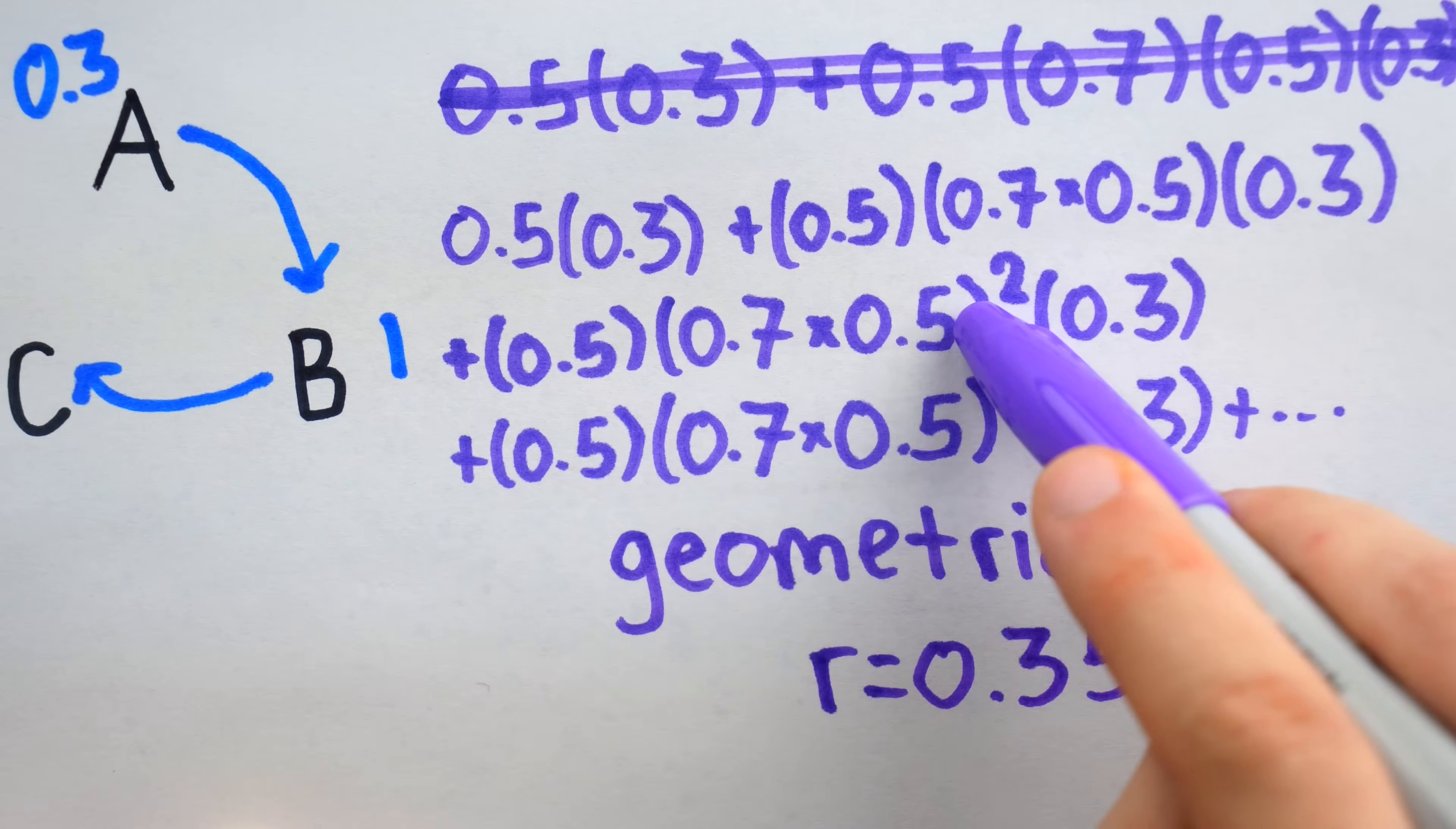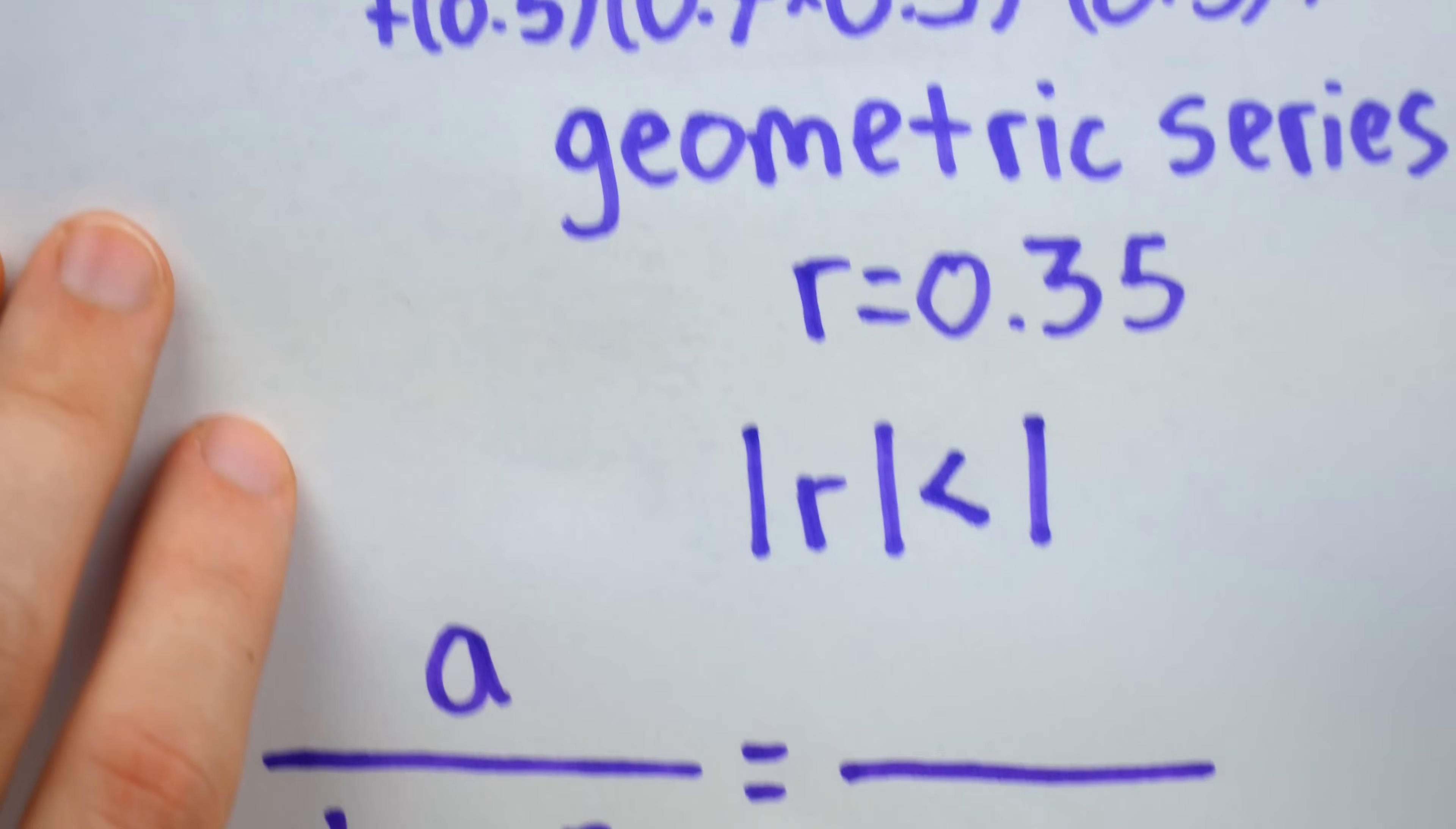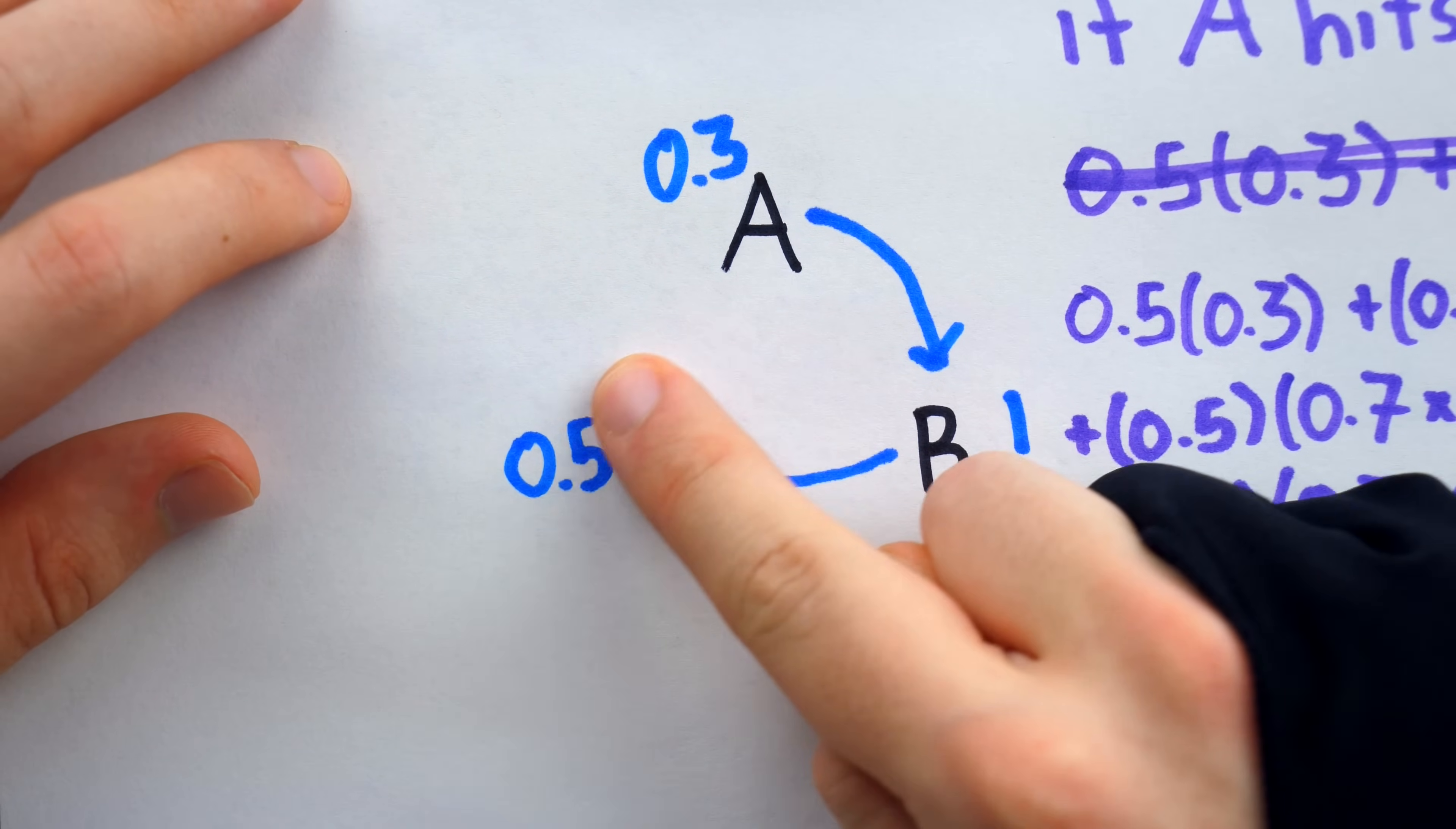And the fact that R is 0.35 is good news for us. In order for a geometric series to actually have a definite value, the magnitude of R has to be less than 1. When this condition is satisfied, the value of the geometric series is the first term, often denoted A, divided by 1 minus that ratio R. So in our case, the first term is 0.5 times 0.3, which is 0.15. And then we just divide by 1 minus the ratio R. So divide by 1 minus 0.35, that's the same as 0.65. And if you divide the numerator and denominator by 0.05, this is actually the same as 3 over 13. So this is A's probability of surviving if he actually manages to hit B with that first shot.